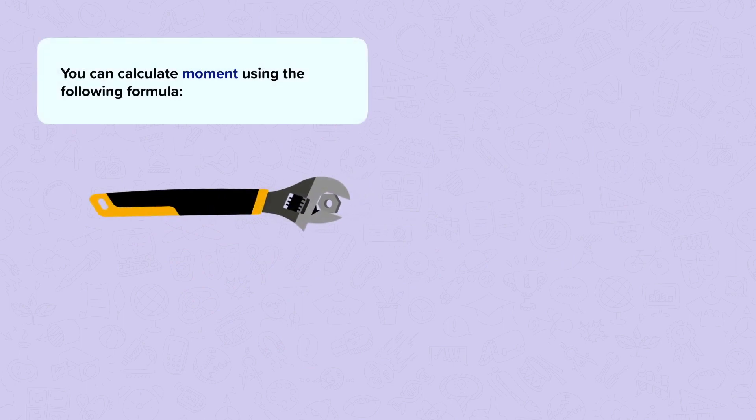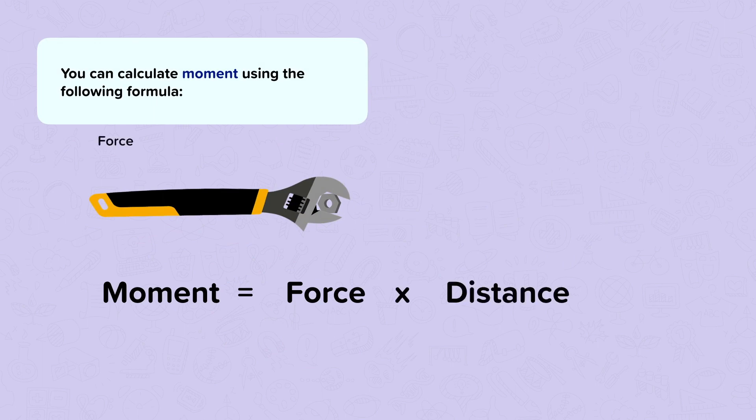You can calculate moment using the following formula. Moment is force times distance. The distance is the perpendicular distance between the line of action of the force and the pivot.